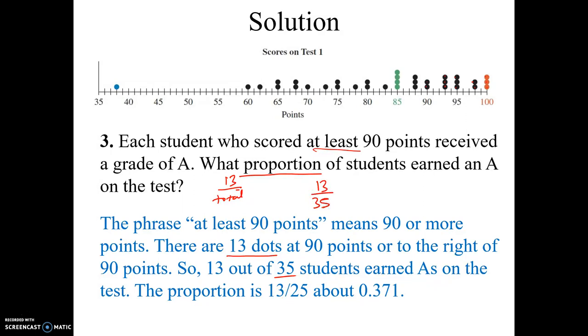The same thing as a relative frequency. So 13 out of 35. So 13 out of 35, it should be 35. 13 out of 35 is about 0.371. So the proportion is about 0.371.